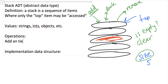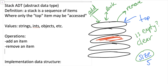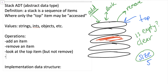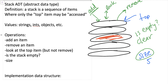We can add an item, we can remove an item, we can look at the top item but not remove it — that's the key part of just looking. We can find out: is the stack empty? We can find out the size of the stack. And we can clear out the stack, making it empty. Now these are general terms — there are actually stack-specific terms for at least these three operations.